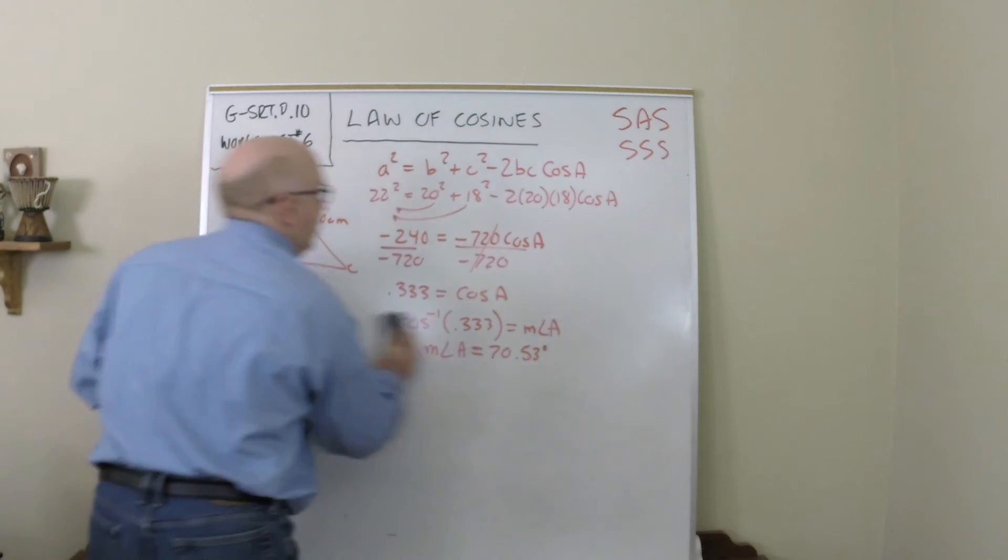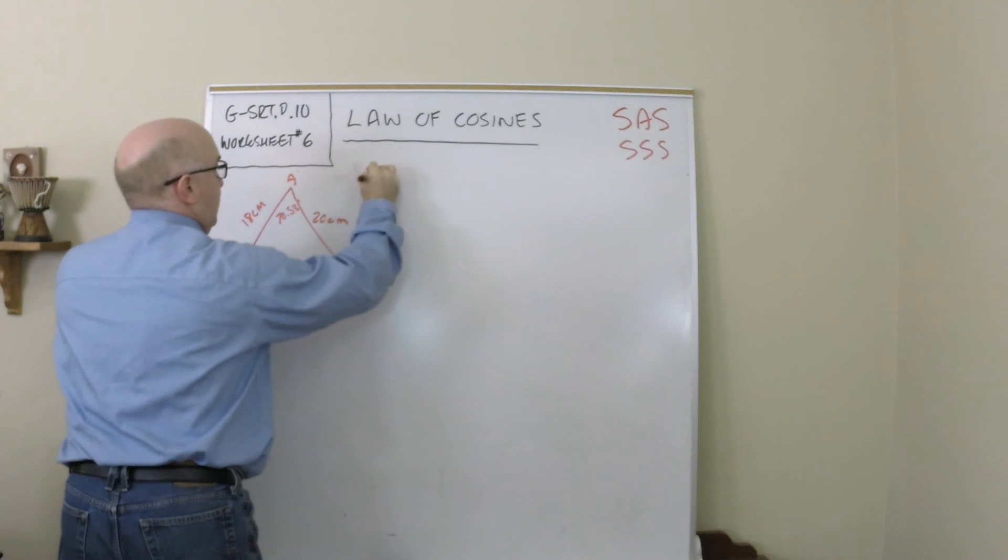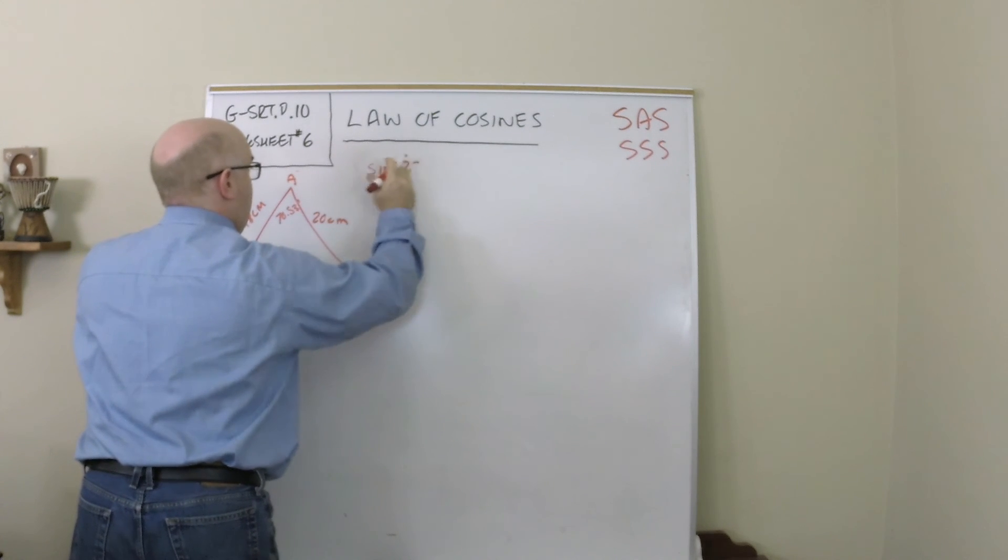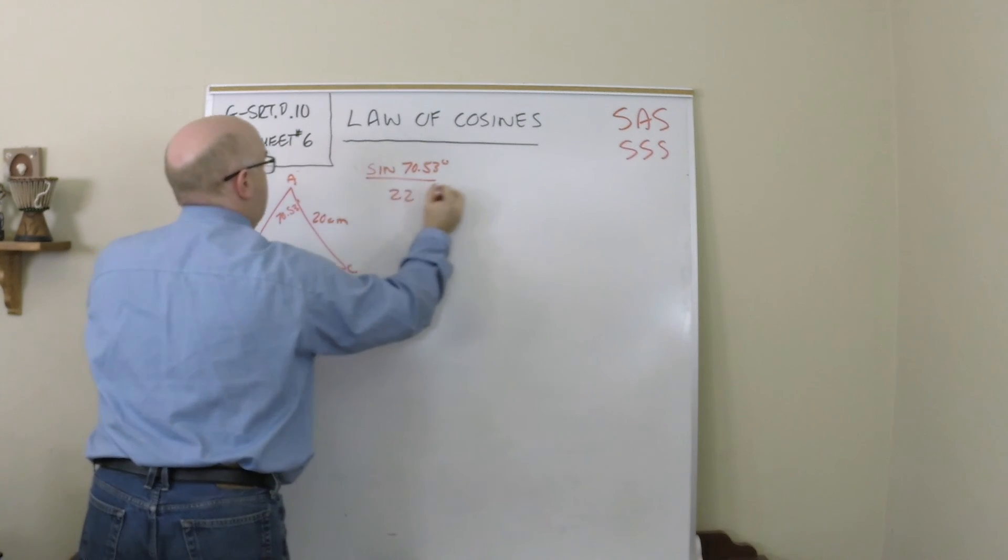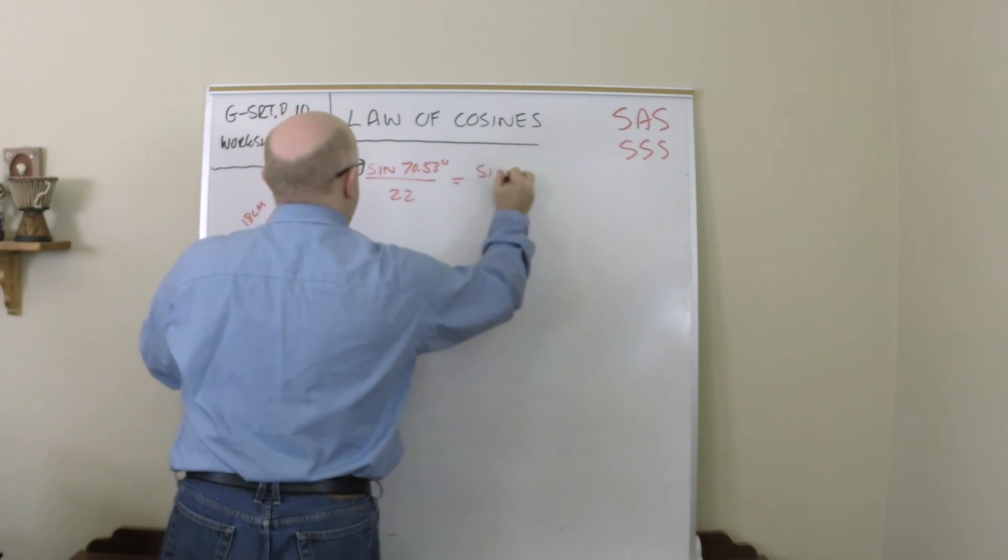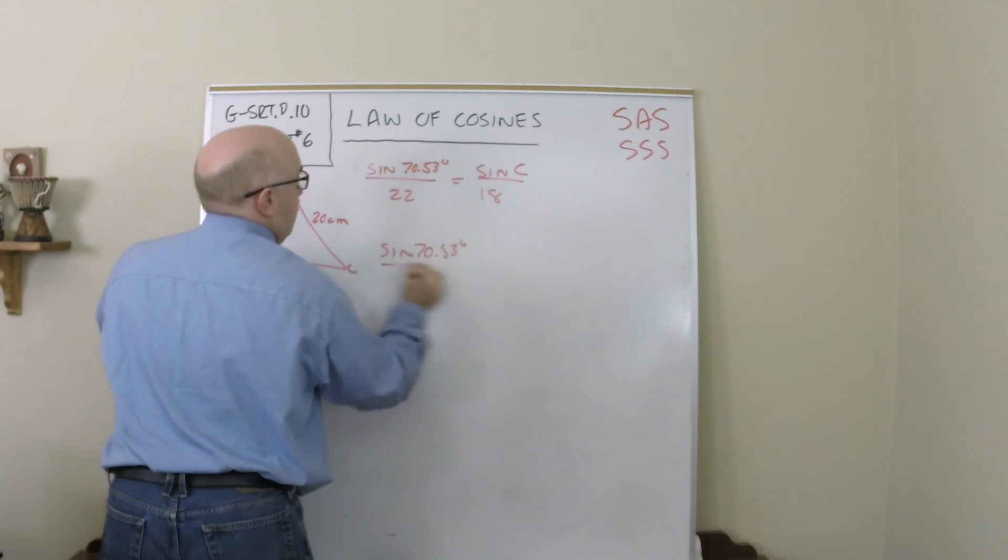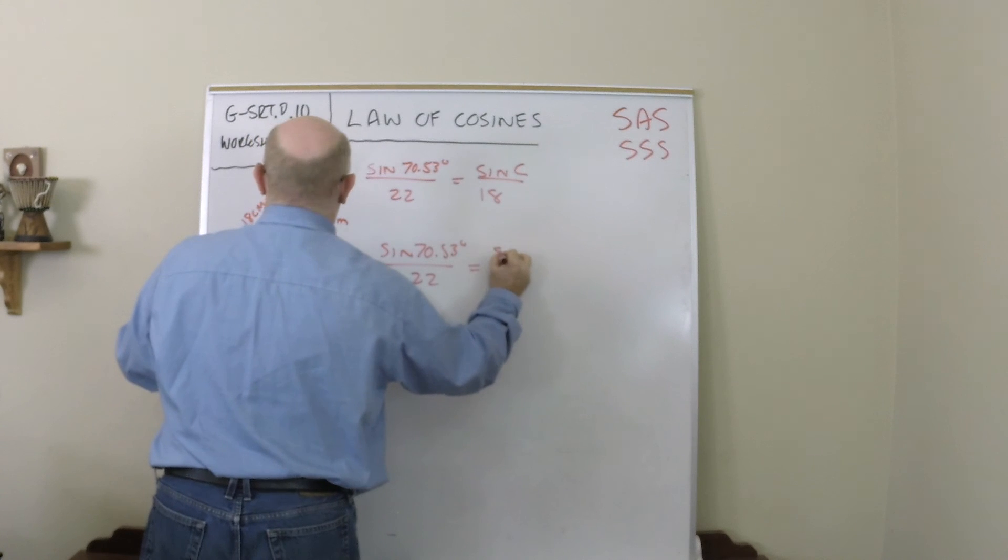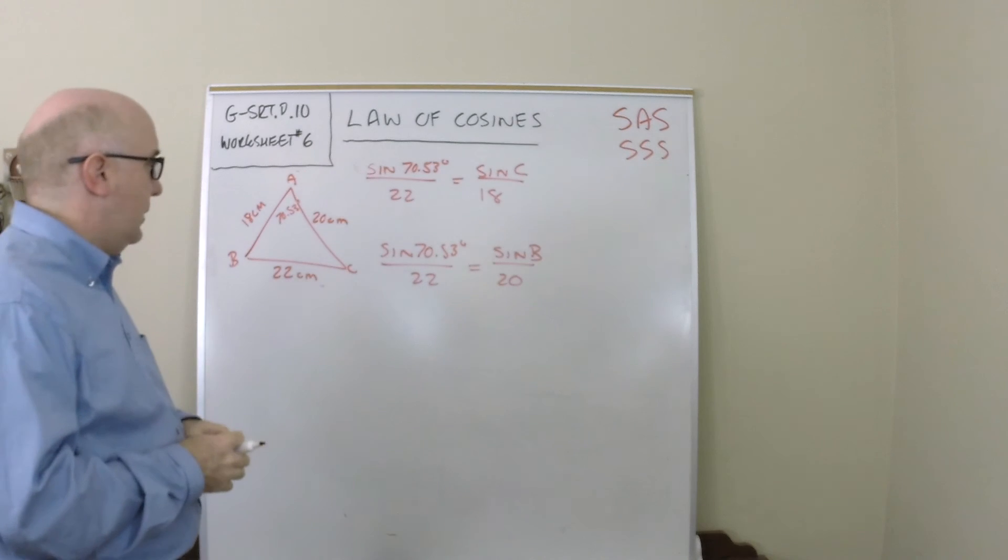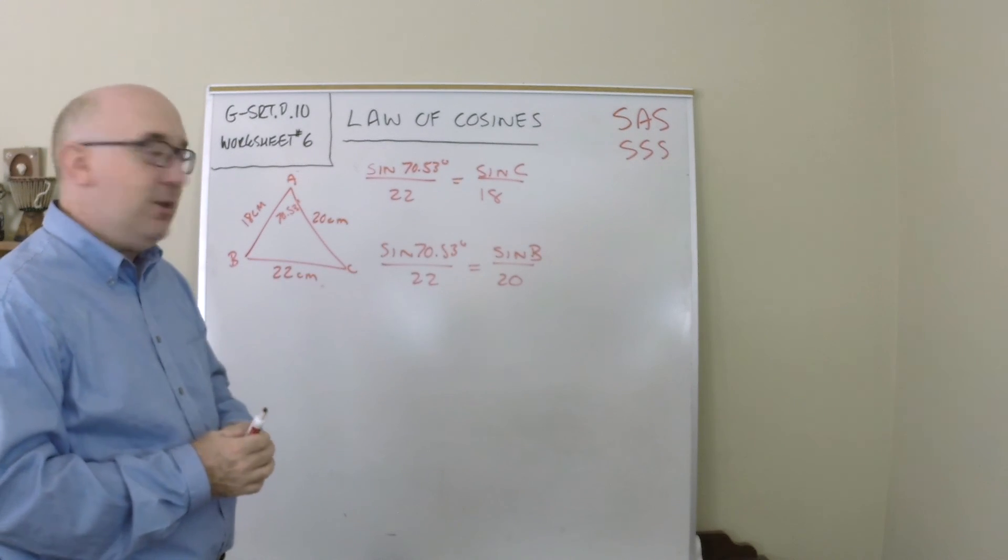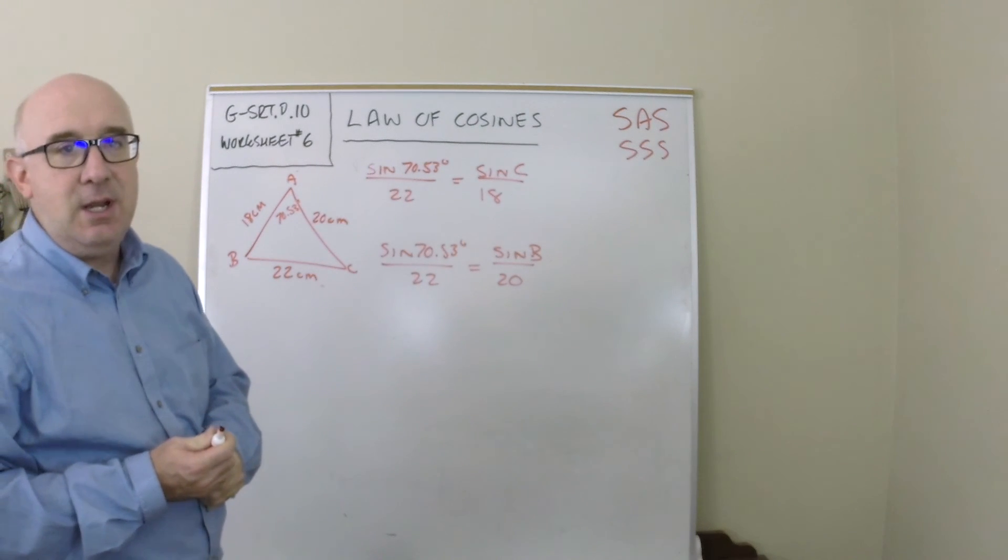Once we've obtained that, off we go to the law of sines. So I now am able to, I'm going to clear myself some space here, I'm able now to start using the law of sines which would say the sine of 70.53 is to 22 as the sine of C is to 18. I could also say the sine of 70.53 is to 22 as the sine of B is to 20. For the sake of time I won't solve those but that would obtain my other two angles. I could find one angle and then the other one would be 180 minus that.